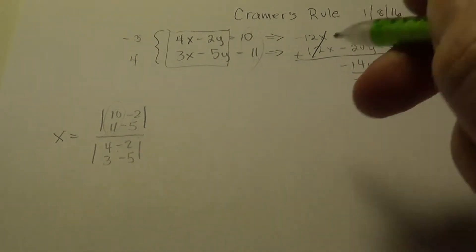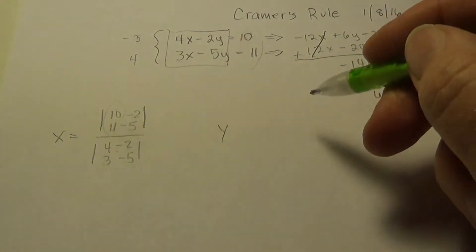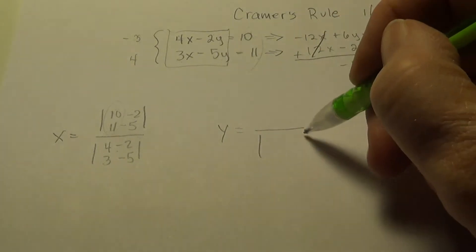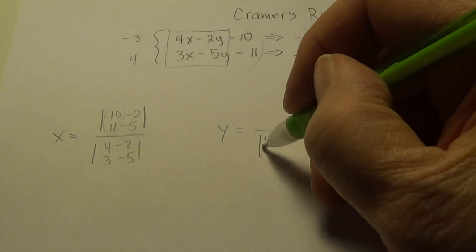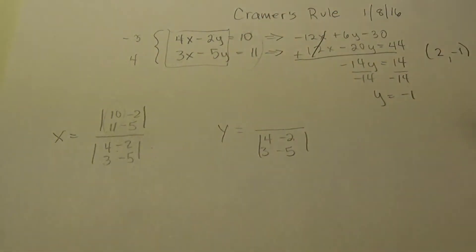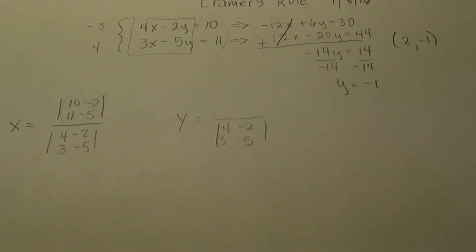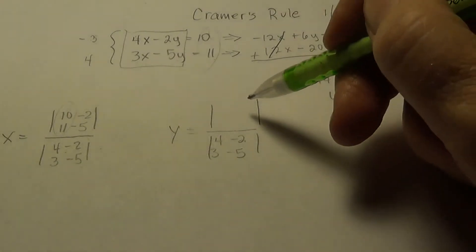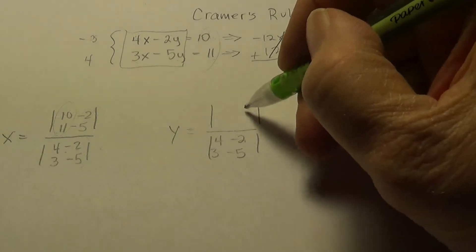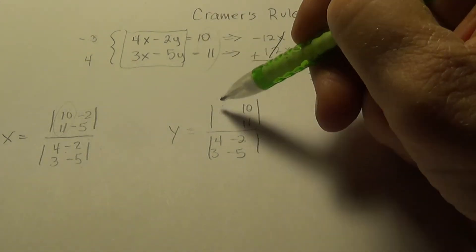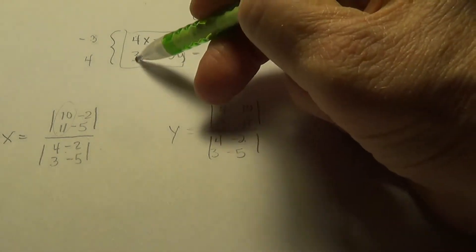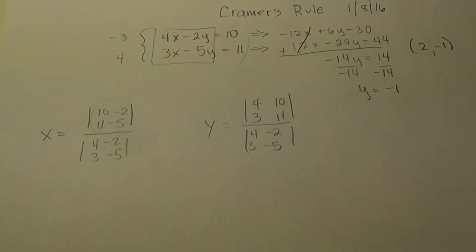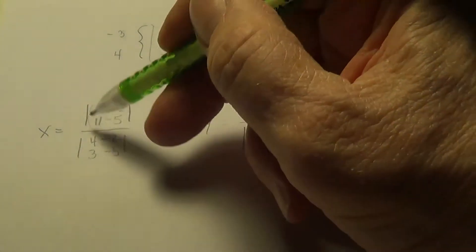All right. So let's do the y value. We'll set it up and we'll come back and do the determinants. The y value on the bottom is going to be the same determinant, the coefficient determinant, just like x. And when we do the top of the y, can you foresee what I'm going to do? Where the y spot would be, I'm going to put in the constants. And where the x spot is, I put in the 4 and the 3 unchanged. And there is no z on this one. So, all right. So we are going to do these. These are determinants.